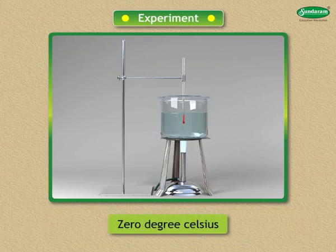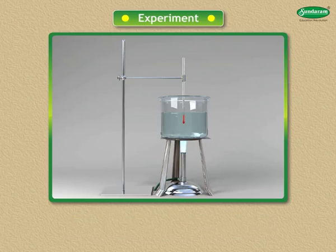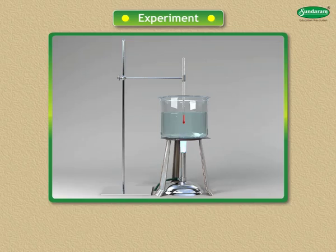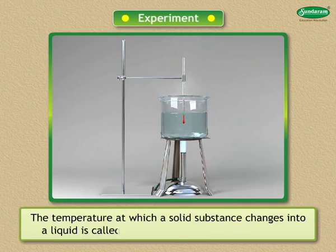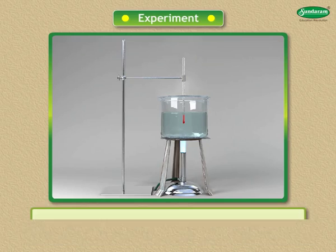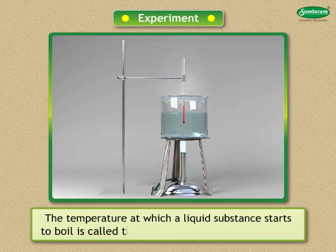It remains at zero degrees Celsius. Where does the heat supplied go? The heat supplied while the ice is changing into water is used up for changing the state. The temperature at which a solid substance changes into a liquid is called the melting point of the substance. Similarly, the temperature at which a liquid substance starts to boil is called the boiling point of the substance.